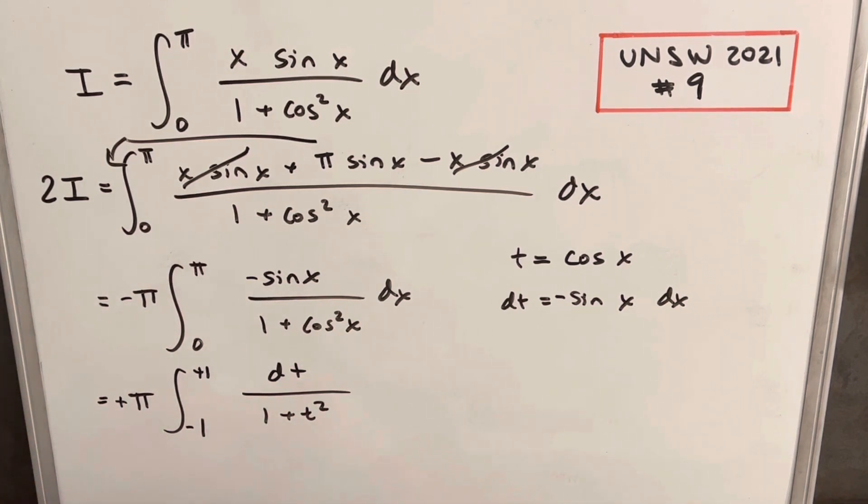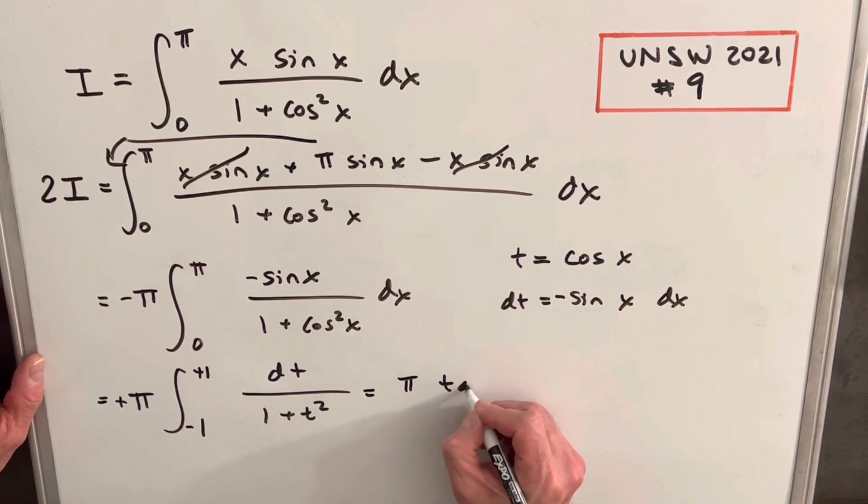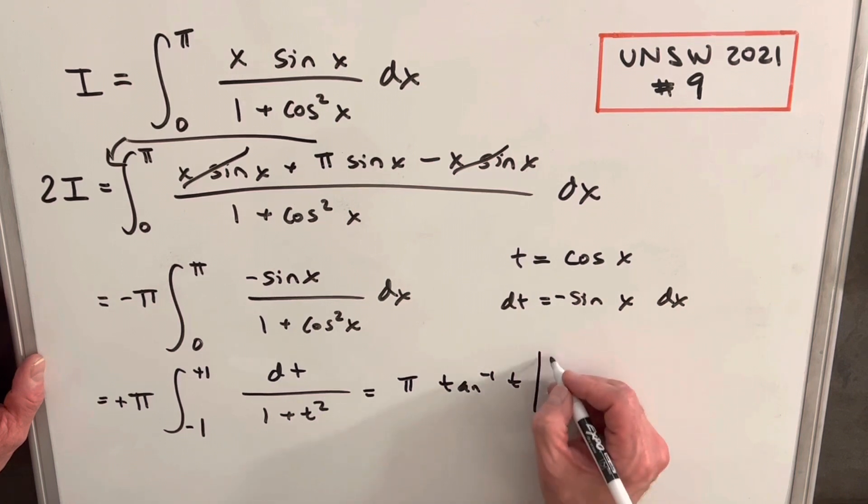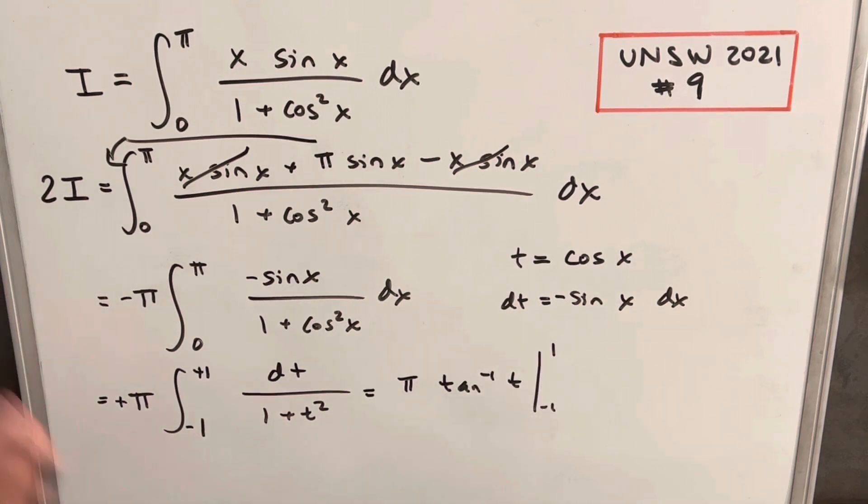And then we're going to integrate. We know what this thing is. This is going to be our arctan formula. So we're going to end up with π times inverse tan t evaluated from minus 1 to 1. And then we can just evaluate those bounds.